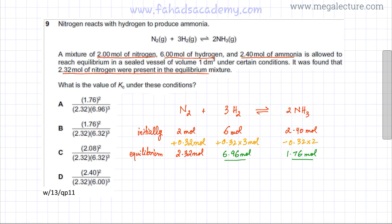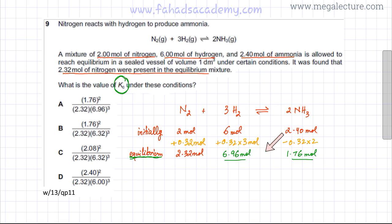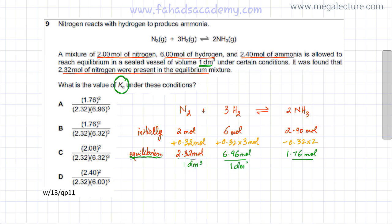These are the equilibrium moles. The next step is finding Kc. We need the concentrations of reactants and products at equilibrium. Since the volume of the container is 1 dm³, concentration equals moles divided by 1, so the values remain exactly the same as the equilibrium moles.